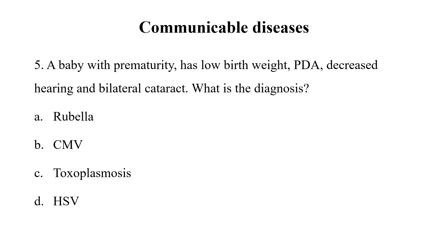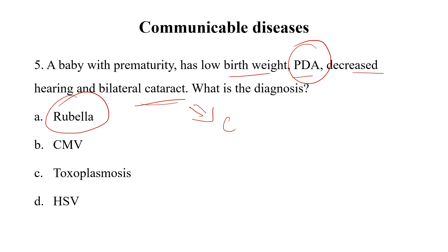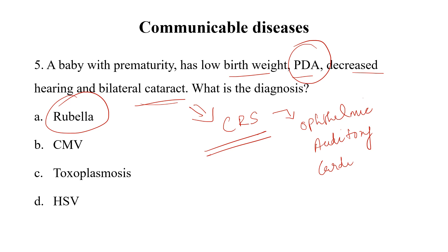A baby with prematurity has low birth weight, PDA, decreased hearing, and bilateral cataract. What is the diagnosis? Options are Rubella, CMV, Toxoplasmosis, and HSV. Without any doubt, the answer is Rubella — specifically Congenital Rubella Syndrome. In congenital rubella syndrome, the child presents with ophthalmic, auditory, and cardiac anomalies. Here the child has PDA (cardiac), decreased hearing (auditory), and cataract (ophthalmic), confirming the diagnosis of Congenital Rubella Syndrome.